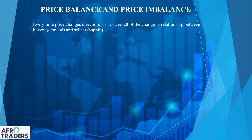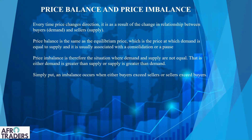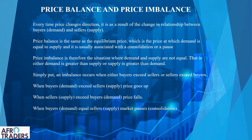Anytime price changes direction it is as a result of the changes in the relationship between buyers and sellers. An imbalance occurs when either buyers exceed sellers or sellers exceed buyers. When buyers exceed sellers, price goes up. When sellers exceed buyers, price falls.